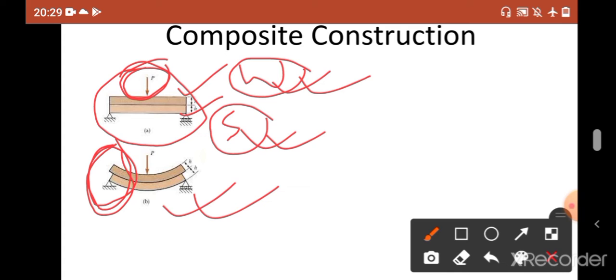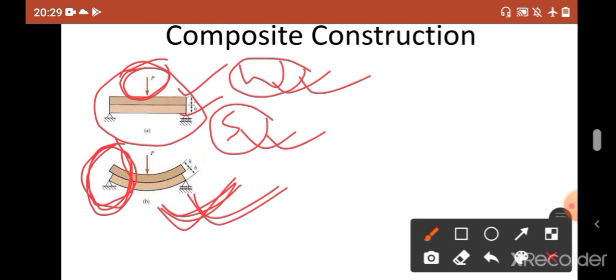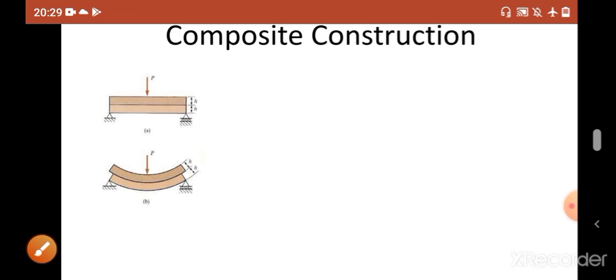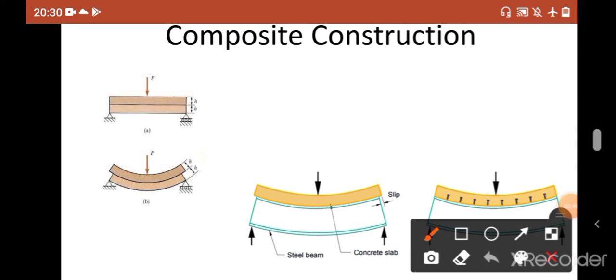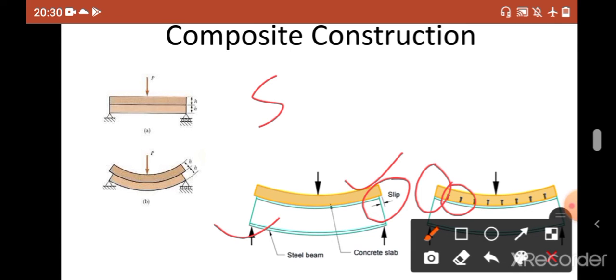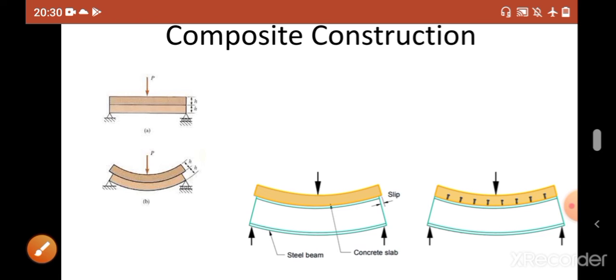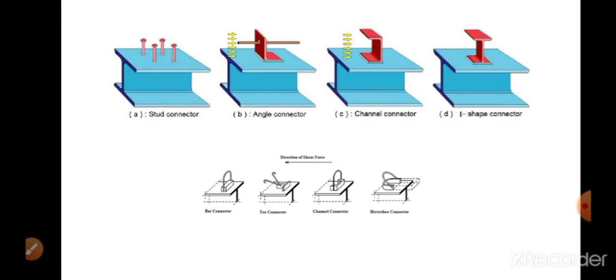In real life this slip is not desired at all. We have to make sure that they bend simultaneously — that these two beams act as an individual composite beam. To ensure that these two different materials bend identically, or to ensure that there is no slip, you have to make sure that these two materials are connected by use of a shear connector. That is why, here you can see, before application of the shear stud there is a slip, and after applying the shear stud there is no such slip.